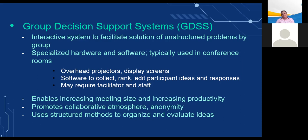The hardware for GDSS includes computer and networking equipment, overhead projectors, and display screens. Special electronic meeting software collects, ranks, edits, and stores the ideas offered in a decision making meeting. More elaborate GDSS setups include a professional facilitator and support staff. The facilitator selects the software tools to help organize and run the meetings. GDSS enables increasing meeting size and productivity, promotes a collaborative atmosphere and anonymity, and uses structured methods to organize and evaluate ideas. GDSS effectiveness depends on the nature of the problem, the group, and how well a meeting is planned and conducted.